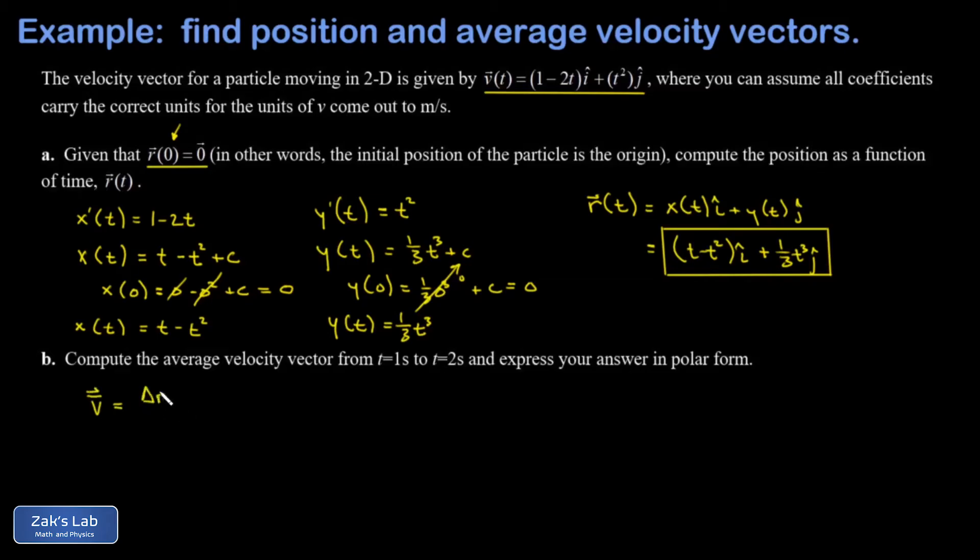So the change in the position vector is going to be the position at t equals two minus the position at t equals one, and the change in time here is two seconds minus one second. Now we just have to plug in t equals two into our position vector.